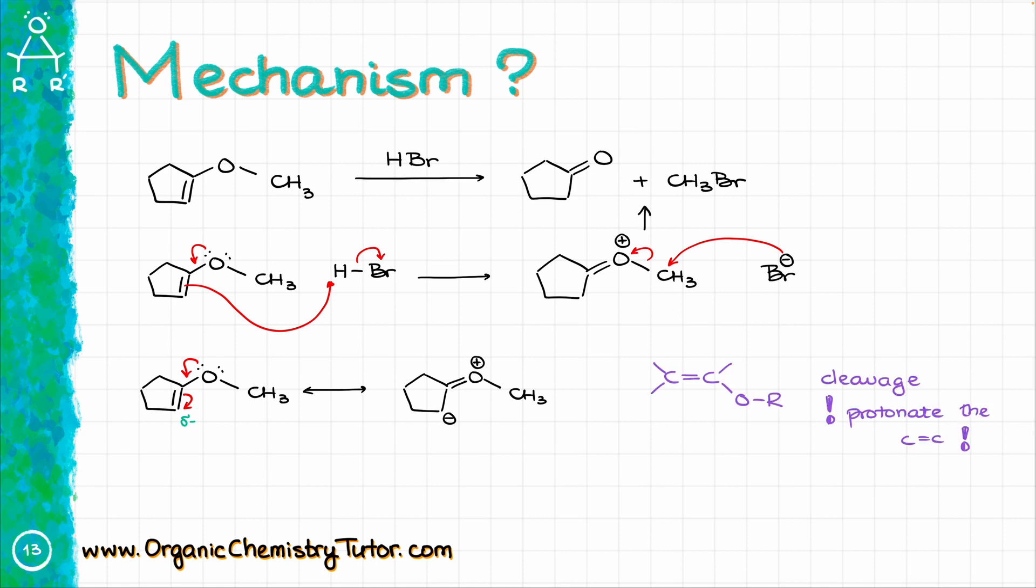So, remember, whenever you are going to be doing a cleavage of the vinylic ether, the ether where the oxygen is directly connected to a carbon-carbon double bond, you always want to protonate your double bond first instead of the oxygen atom.